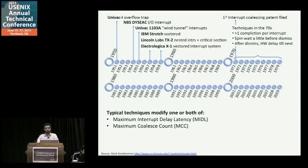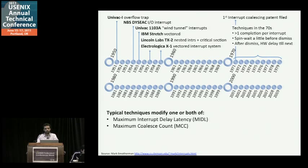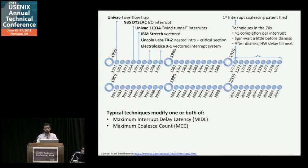Network interrupt handling schemes to this day obey essentially the same framework from the 1970s. There are two key parameters. MIDL — Maximum Interrupt Delay Latency — is basically like a deadline: after a completion enters the I/O controller, what's the maximum time it will delay before issuing the interrupt to the host? The second is the Maximum Coalesce Count, MCC, for early delivery of the interrupt before that deadline expires. If your MCC is five and you reach five I/O completions, you issue the interrupt earlier than the deadline.